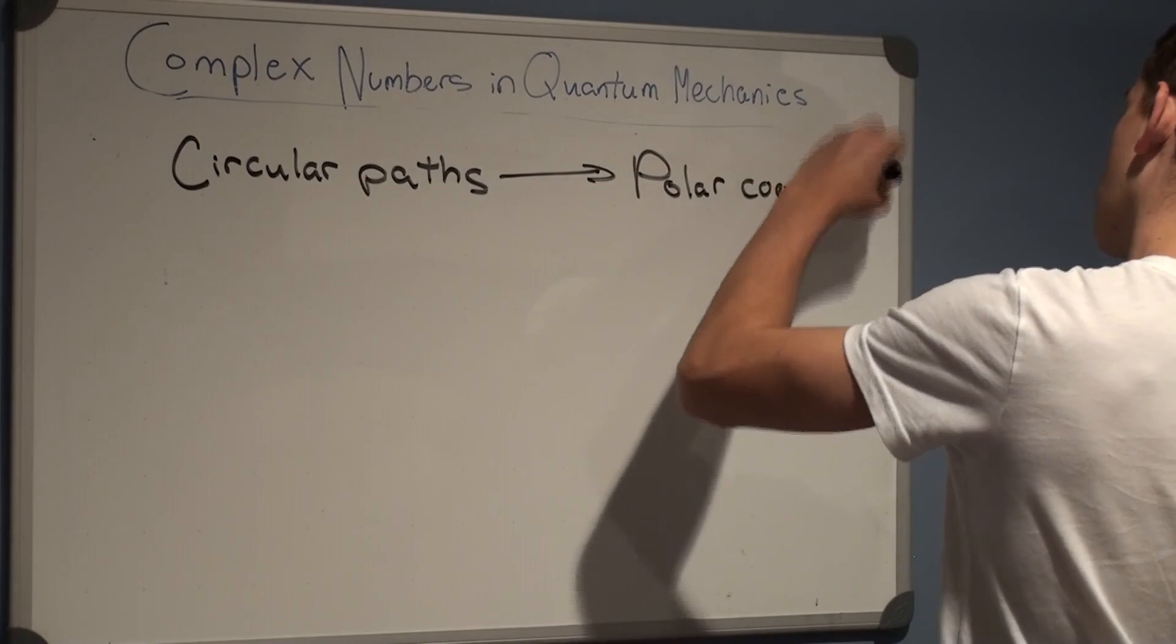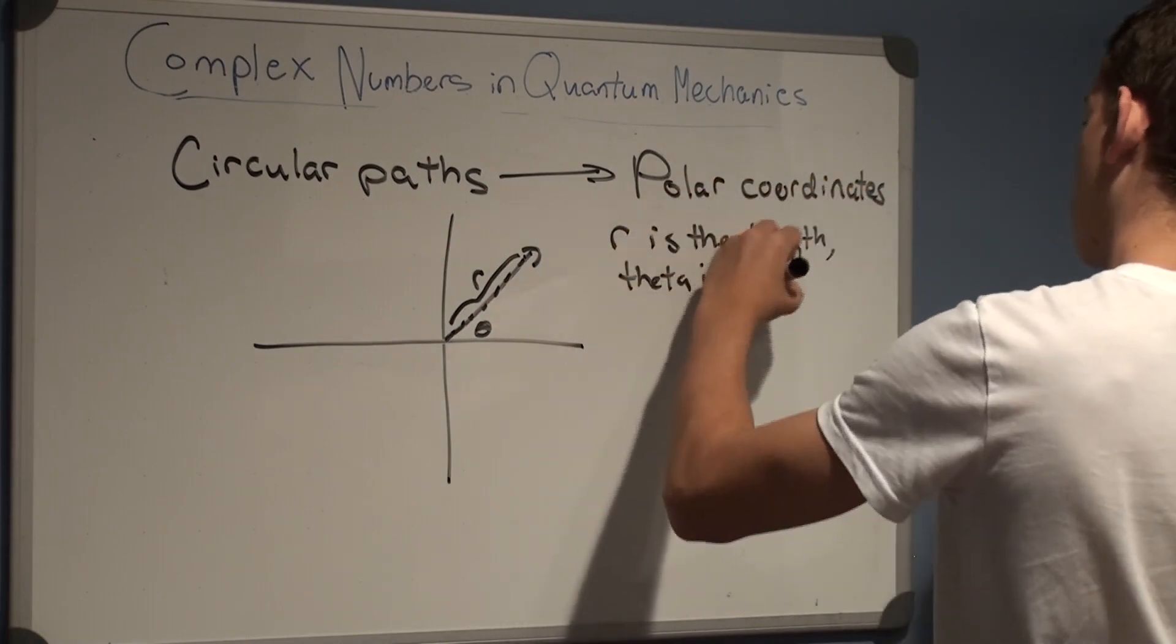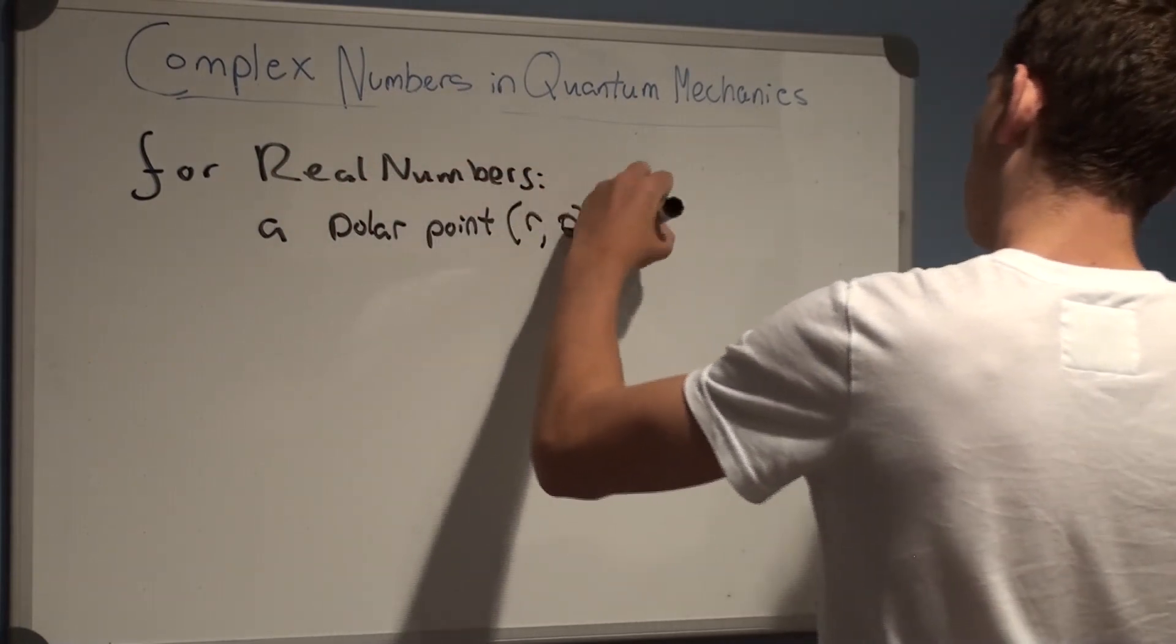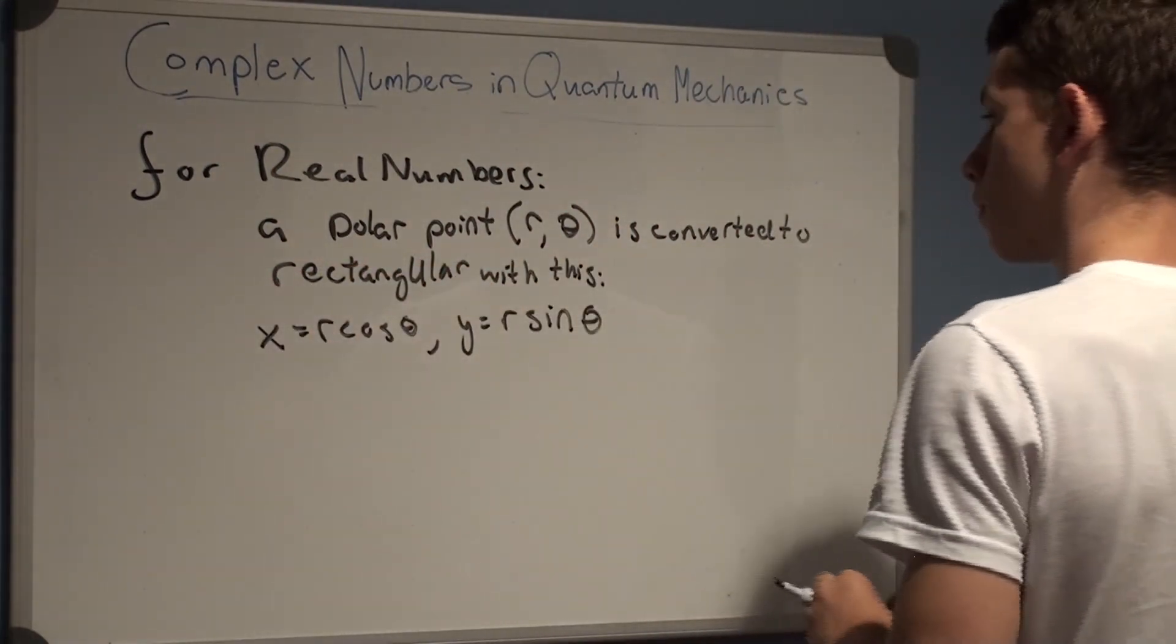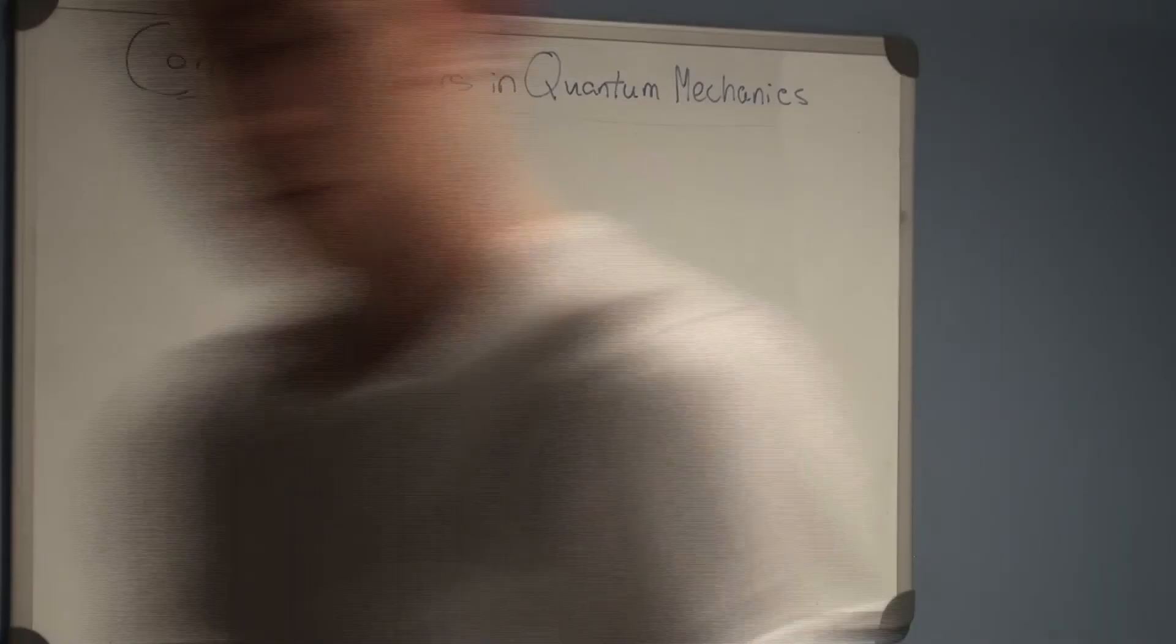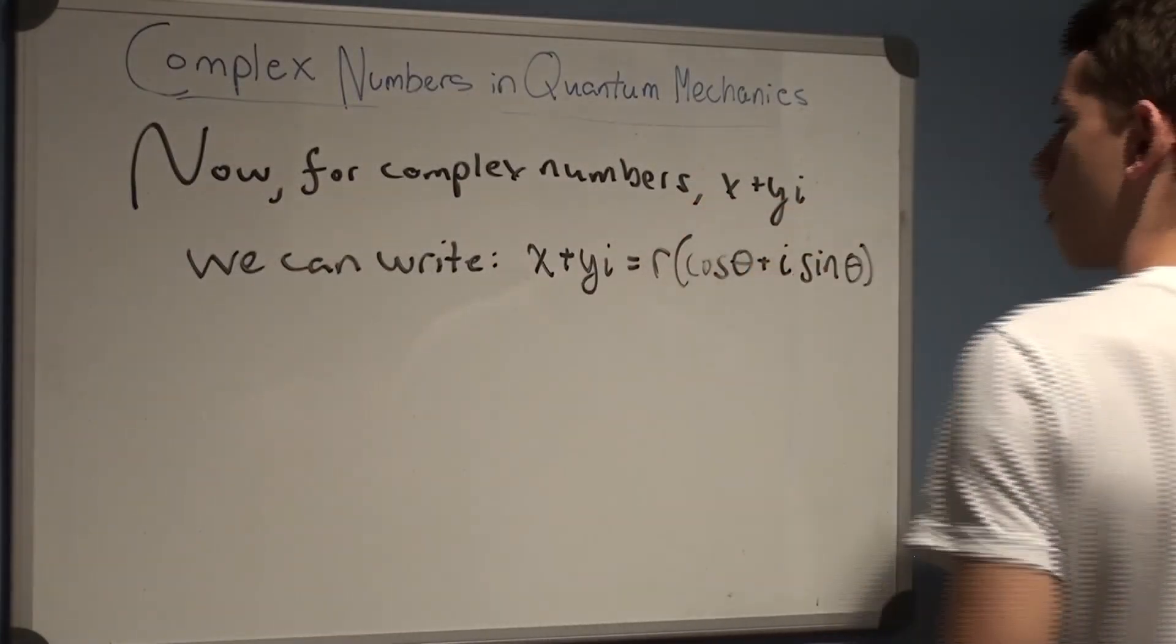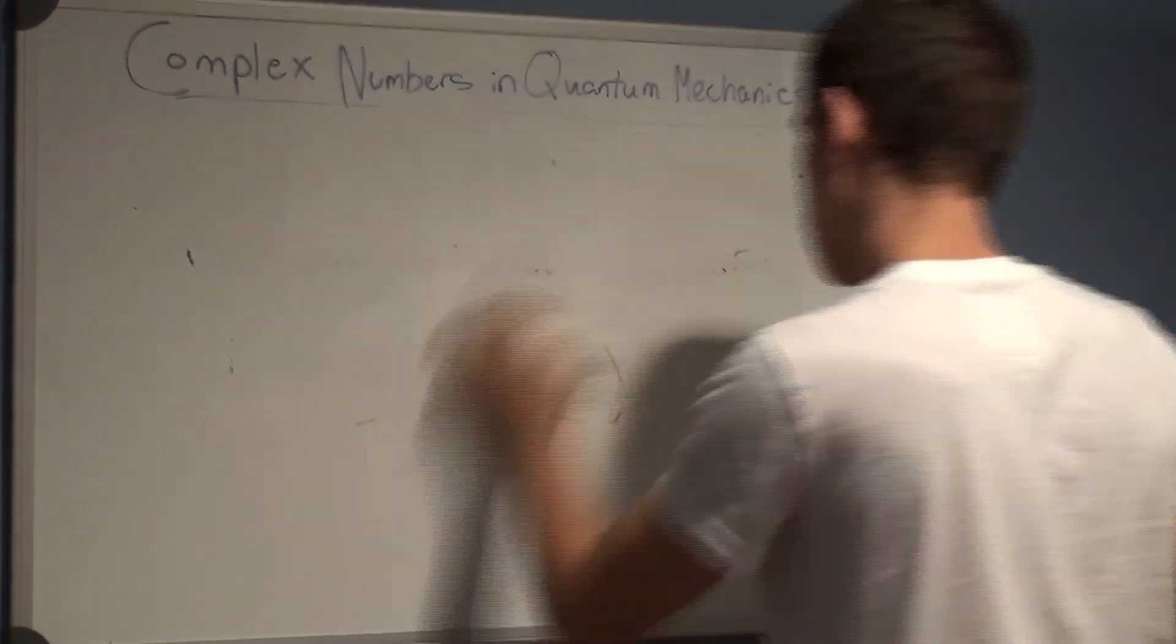Polar coordinates have magnitudes and angles denoted by r and theta, respectively, as opposed to the x and y values of Cartesian coordinates. Polar coordinates are related to these Cartesian coordinates with trigonometric functions. For example, x on the Cartesian plane is always equal to r, the magnitude, times cosine of theta, the angle. And y, similarly, is equal to r sine theta. We can define complex numbers x plus yi as r times the quantity cosine theta plus i sine theta using similar logic. Make sure you see why this is true. This is called the polar form of a complex number, and it could be very useful in analyzing cyclical motion.